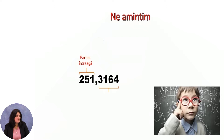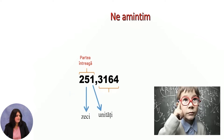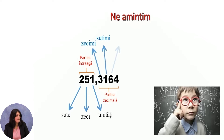For the number 251.3164, the integer part is 251, which is composed of units, tens, and hundreds. The decimal part, in turn, is composed of tenths, hundredths, thousandths, and ten-thousandths.